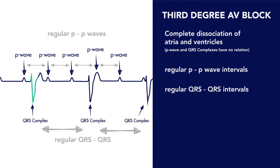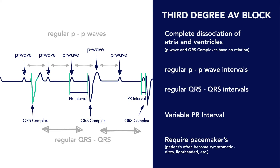This results in a PR interval that widely varies. Finally, 3rd degree AV blocks are dangerous and will often require some form of intervention, such as a pacemaker.